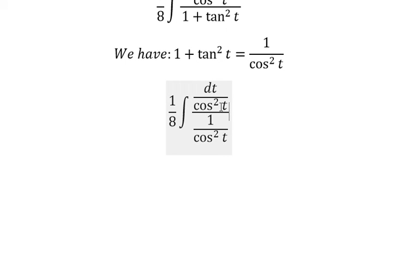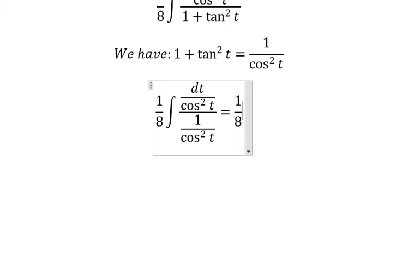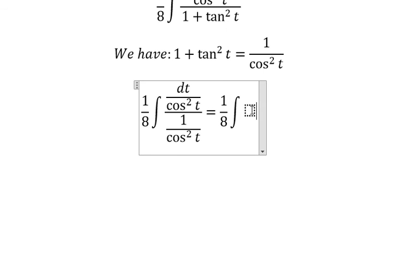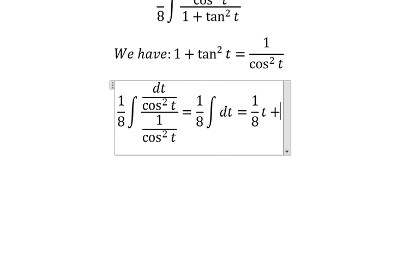Next we have cos^2 t and cos^2 t that cancel together, and now we have 1/8 times the integral of dt, which gives us 1/8 t plus C.